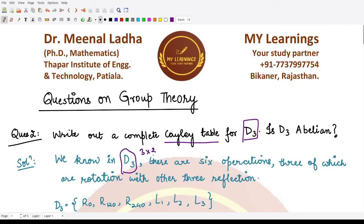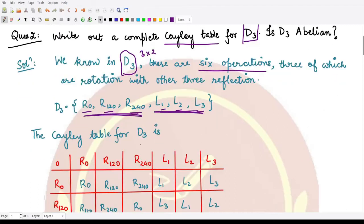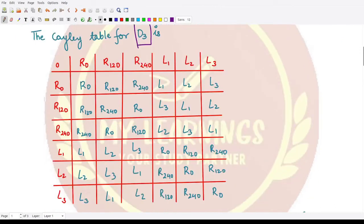They are R0, R120, R240, L1, L2, and L3. These represent reflections and rotations. Now we need to write the Cayley table for D3, which means we need to see the composition of each of these operations.